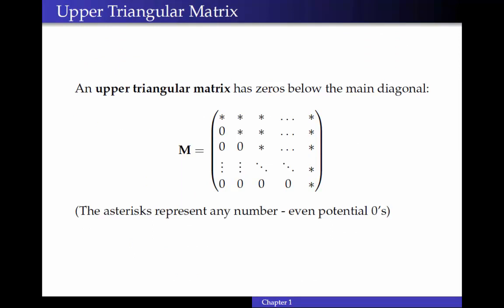Next, we have an upper triangular matrix, and that's a matrix that has zeros below the main diagonal. So it's upper triangular because all of the non-zero stuff happens in the upper triangular portion of the matrix. And so these asterisks here that I've used can represent any number. And they can be zero. There can be zeros up there. The only thing that's necessary is that below the main diagonal, every element is zero.